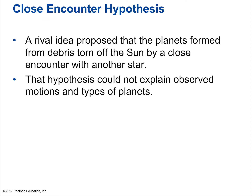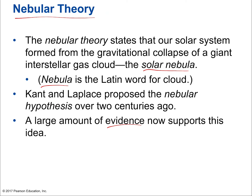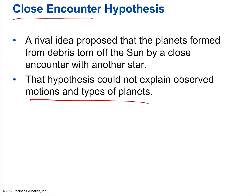The competing close encounter hypothesis proposed that planets formed from debris torn off the sun by a close encounter with another star. That hypothesis could not explain the observed motions and types of planets. The idea was that our star passed by another star, and the gravitational pull sheared off the upper layers, with leftover matter forming the planets — but there are many issues with this theory. Two hundred years ago both theories seemed reasonable, but we now know the nebular theory is correct.